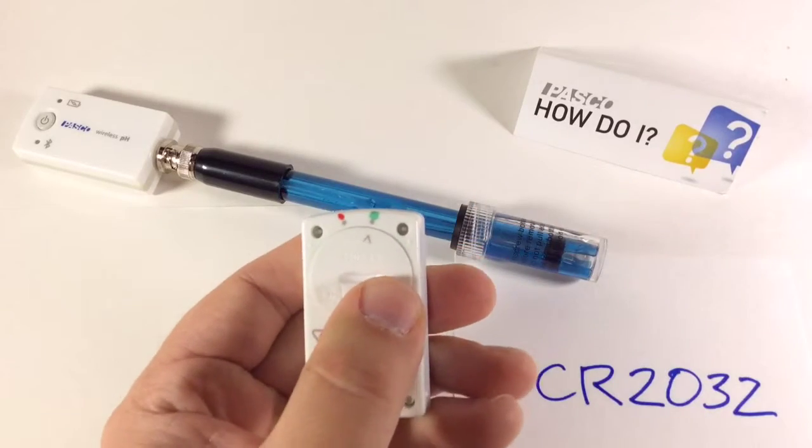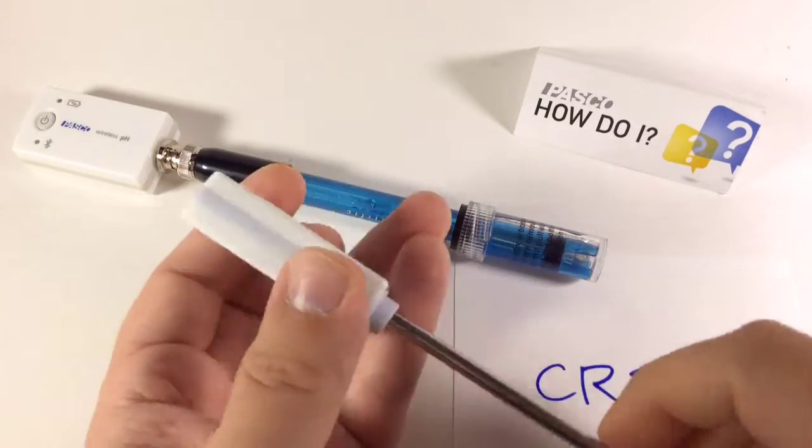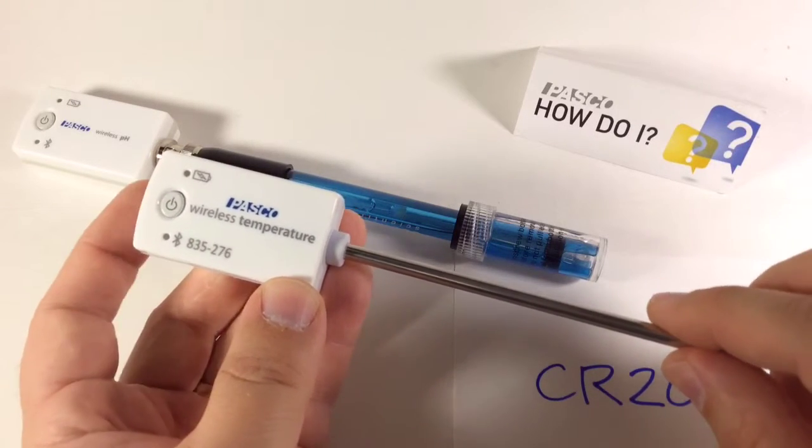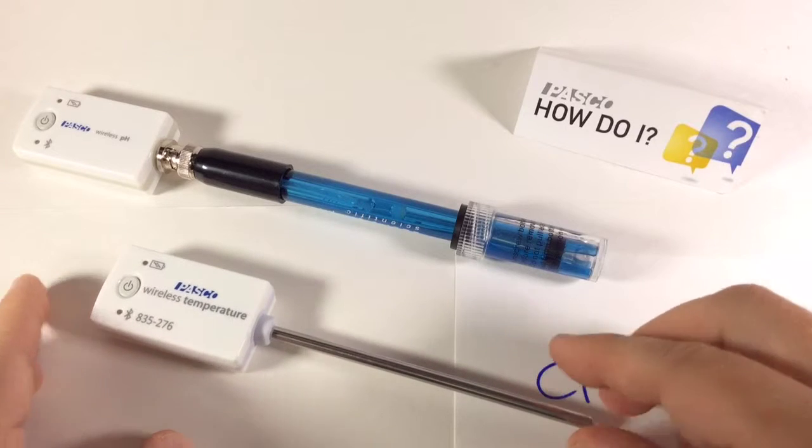Now it does take a little bit of force, and that's because you're simply compressing the O-ring to ensure the water tightness of the sensor. So, that's how you change the battery of our wireless sensors that take coin cell batteries. Thanks.